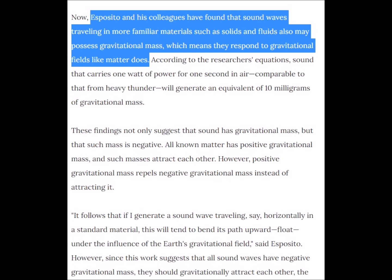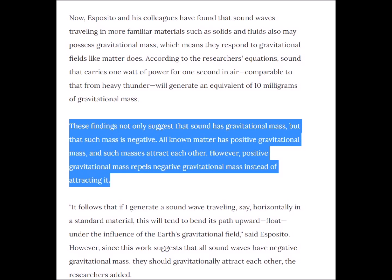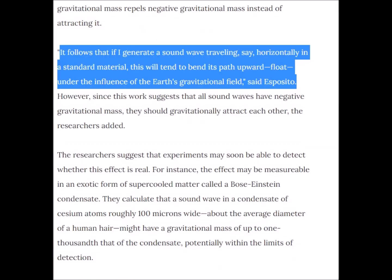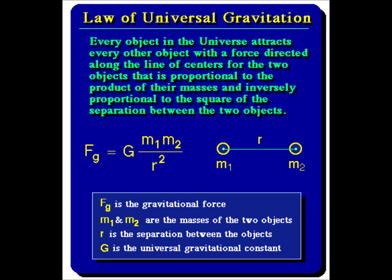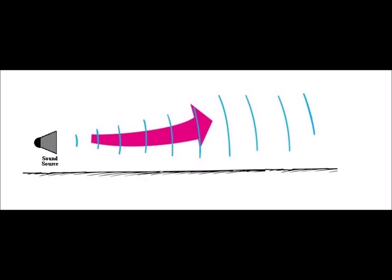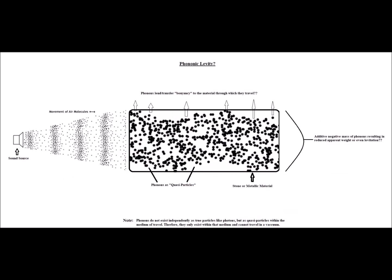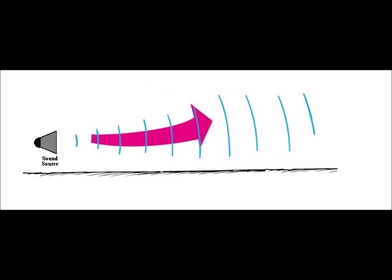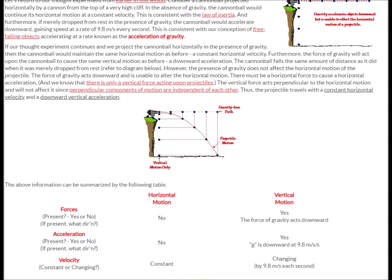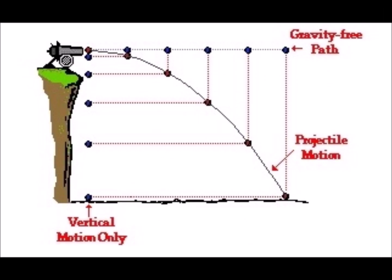Another document reiterates Esposito and his colleagues' findings that sound not only has a gravitational mass, but that such mass is negative. All known matter has positive mass and such masses attract each other, as shown in Newton's law of gravitation. However, negative masses in the case of sound waves are repelled by the positive mass of the Earth rather than being attracted by it. Hence, sound waves or phonons traveling horizontally in a standard material would tend to follow an upward bend or curve in the Earth's gravity instead of a downward curve, such as a thrown ball, according to Esposito.